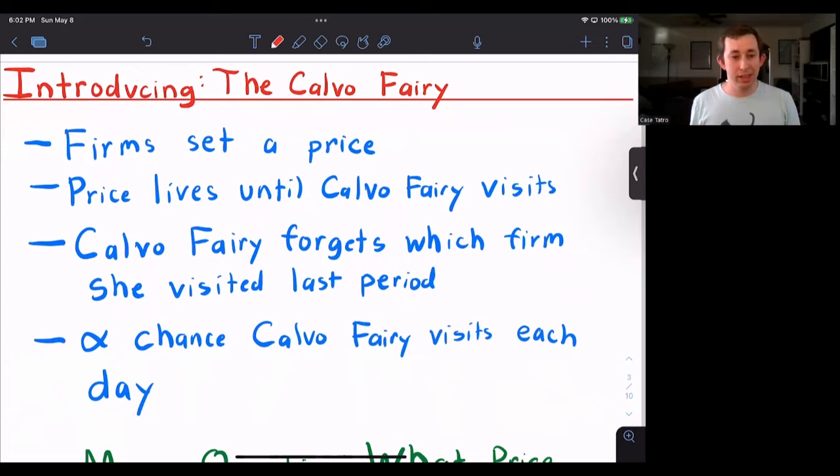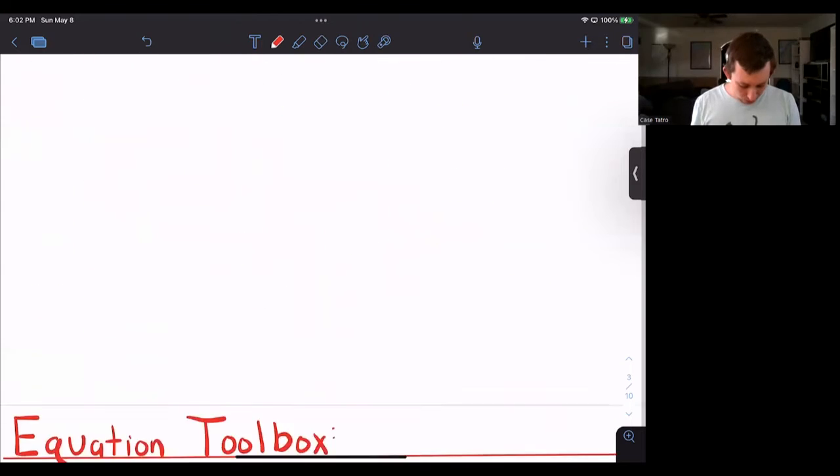What price should the firm set knowing that they have no idea when the Calvo Fairy will visit next and when they're able to change their price? So that is our main question.